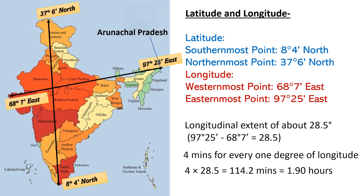So in India, the sun rises about 2 hours earlier at the easternmost point near Kibitu in the Anjaw district of Arunachal Pradesh, compared to the westernmost point near Guhar Moti in the Kutch district of Gujarat. There is a noticeable difference in sunrise and sunset times across the country due to its longitudinal extent, and the easternmost parts of India experience sunrise and sunset very early.